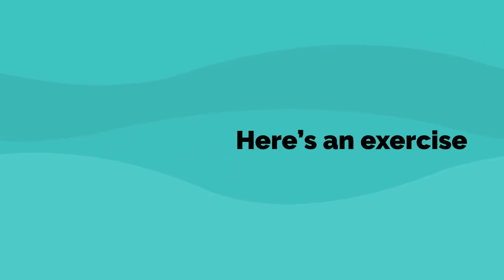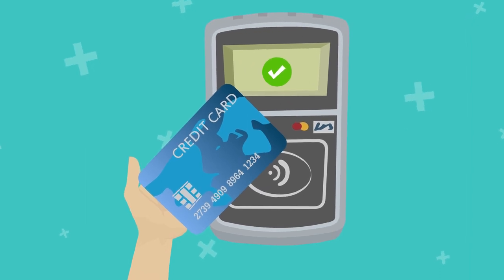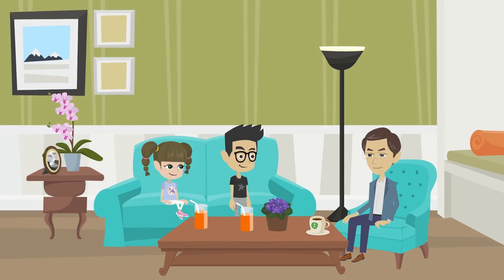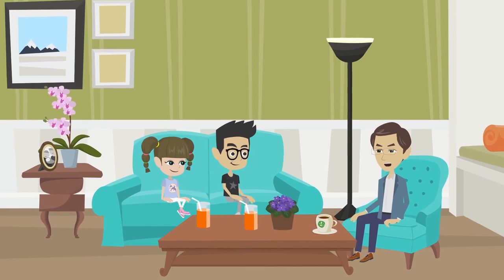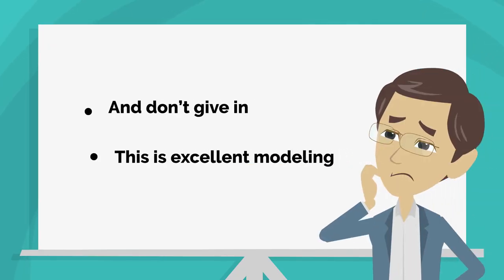Here's an exercise. Select something you really want and can afford to purchase or make payments on. And then don't let yourself have it. Instead of trying to ignore your desire to have that thing, talk about it often and don't give in. This is excellent modeling.